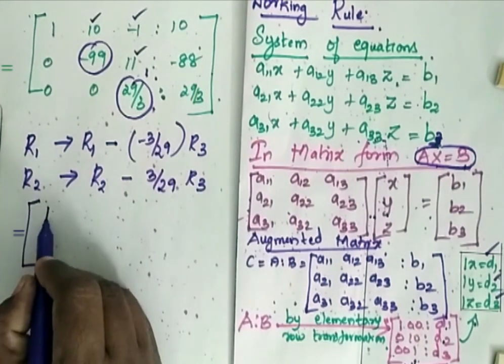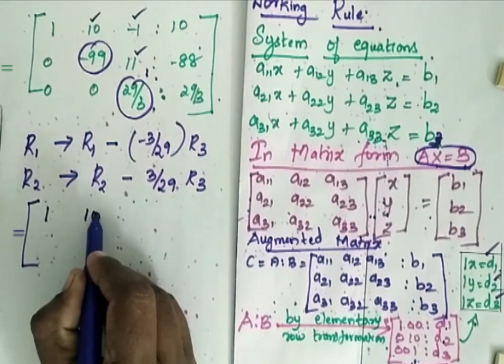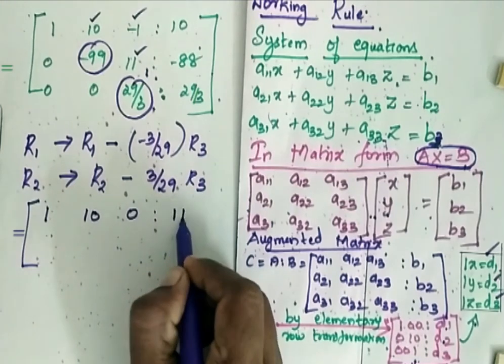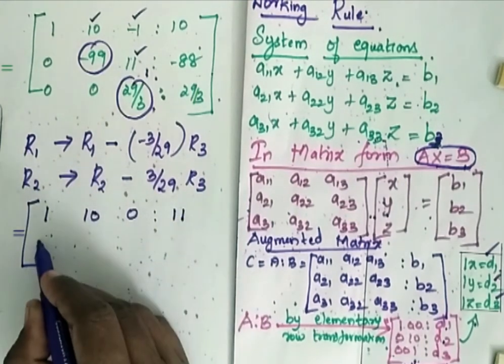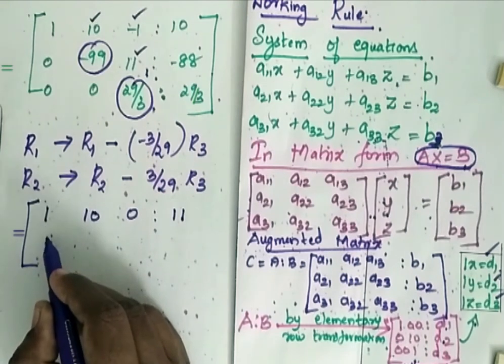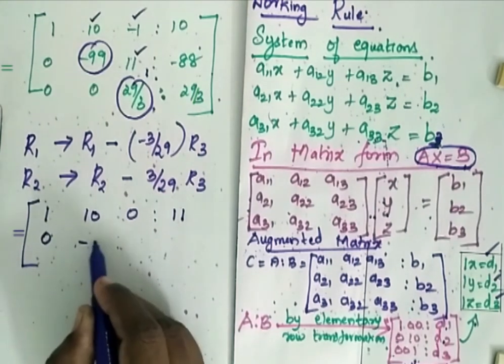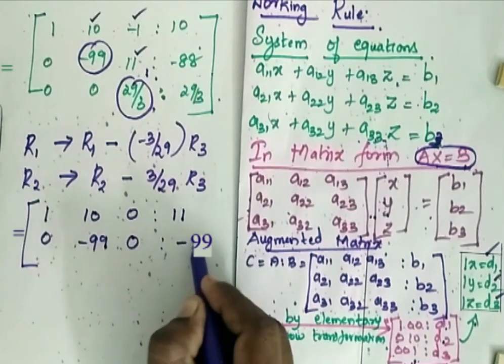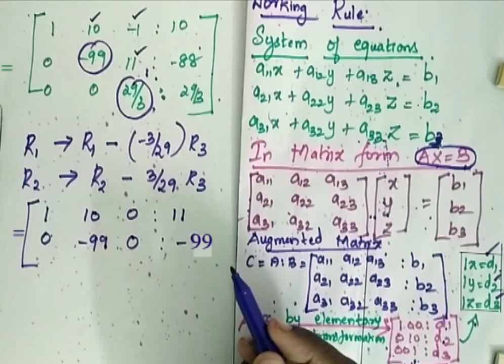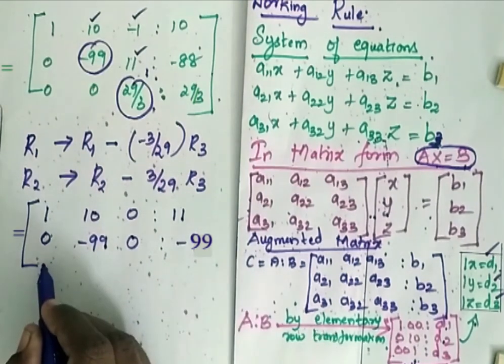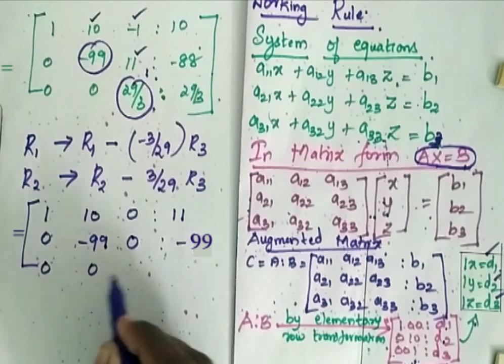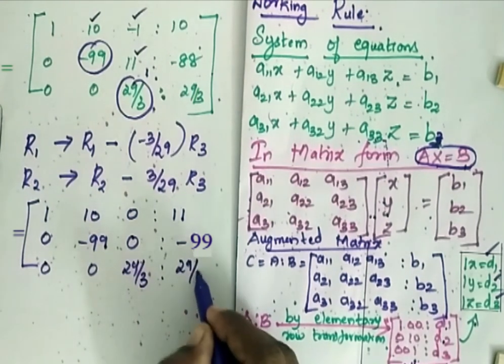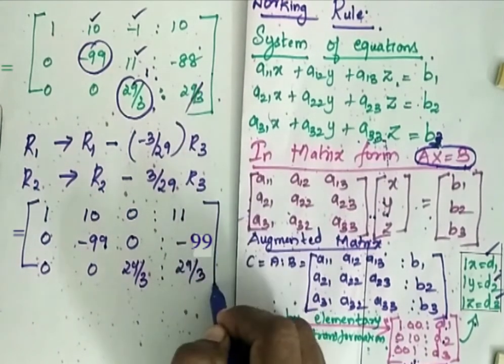This is the matrix which we have obtained. So now we have to get 0's here, 1 here, again 0 here and here it must be 1. So now I am going to replace my matrix R1 and R3. My R1 is R1 minus minus 3 by 29 R3. My R2 is R2 minus 3 by 29 R3. So now when I go for replacing, I will get the matrix as 1, 10, 0 here. So here it is 11. Again when I come here it is 0, minus 99, it is 0 and here I get as minus 9. Then my R3 becomes 0, 0, 29 by 3 is to 29 by 3 without any change.